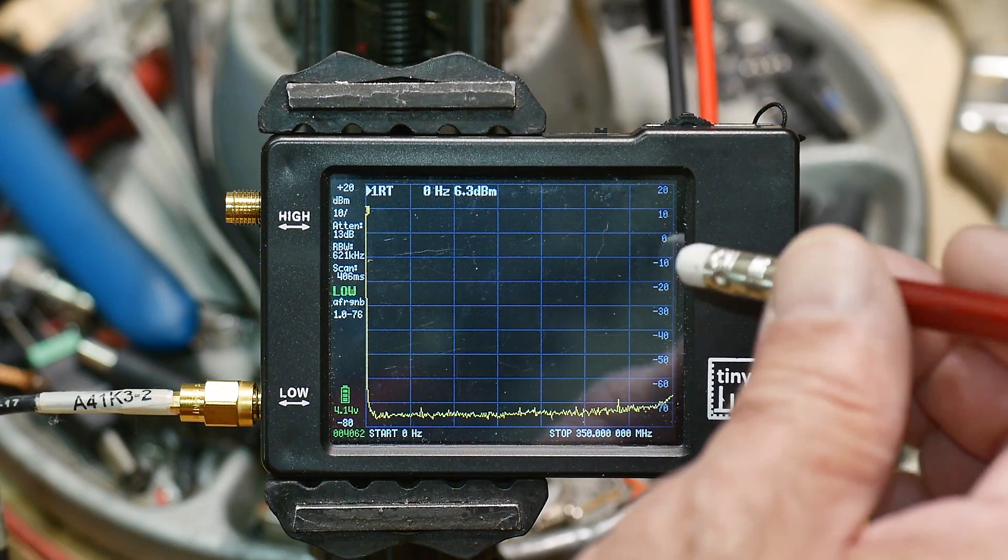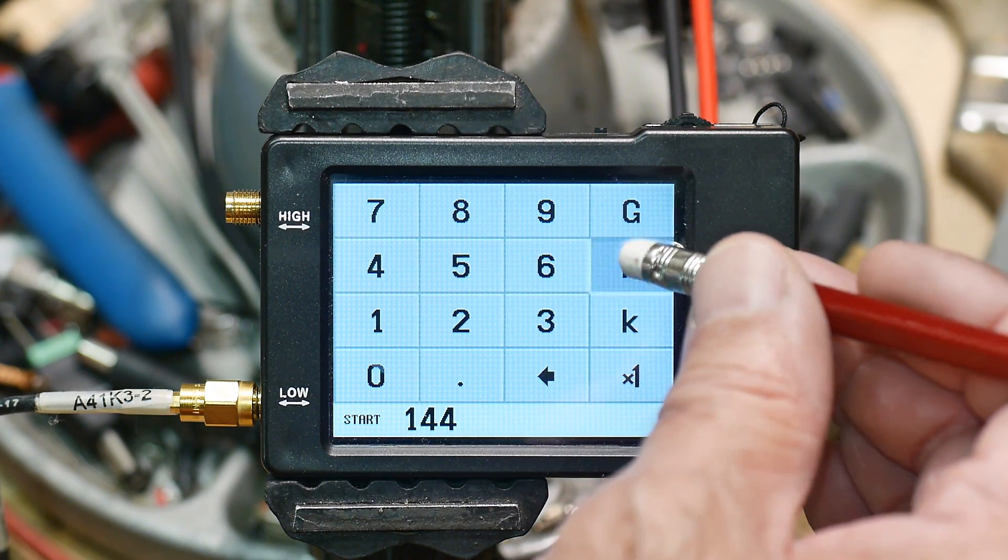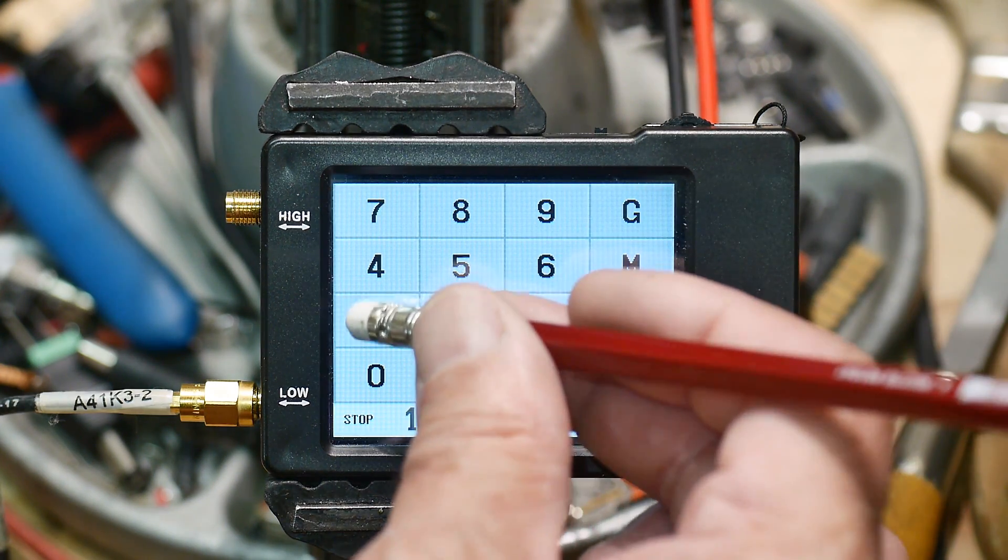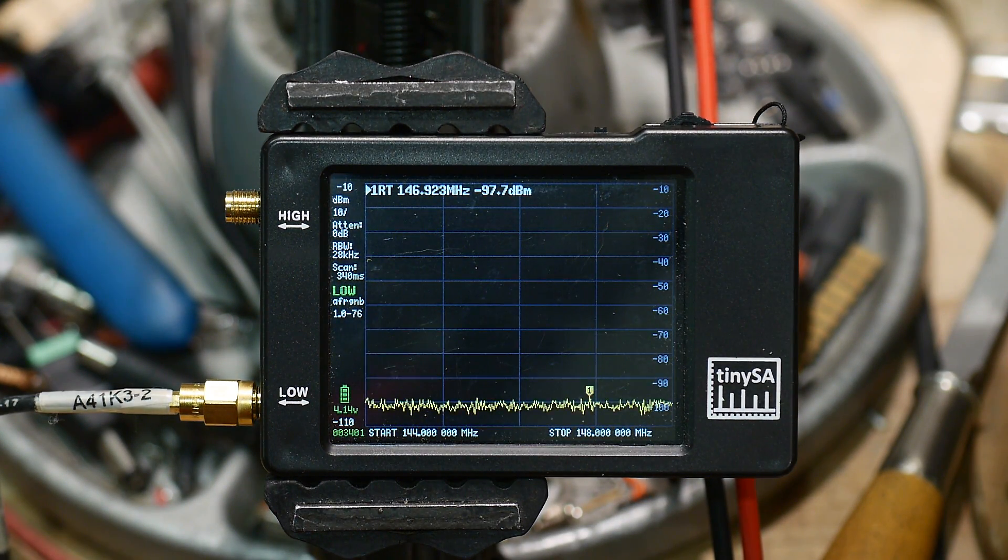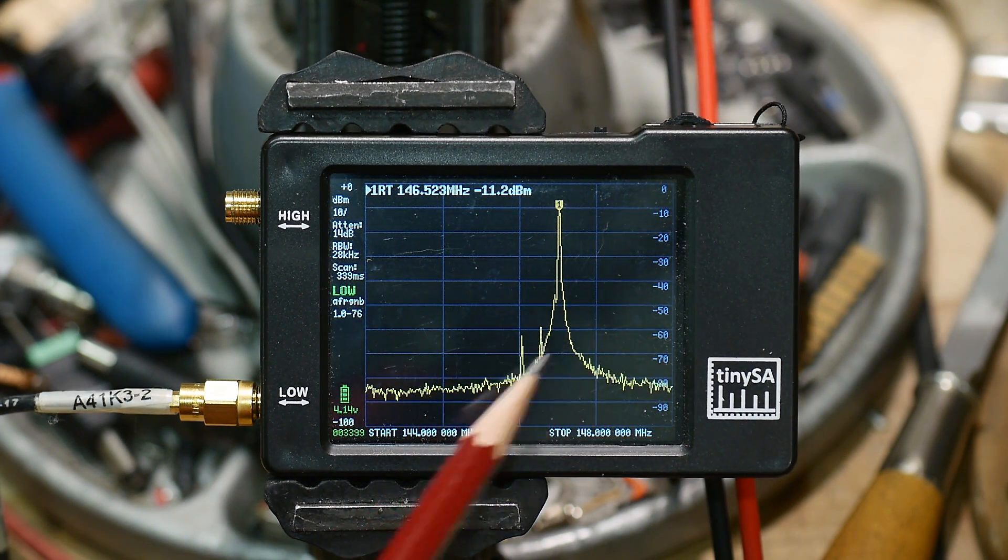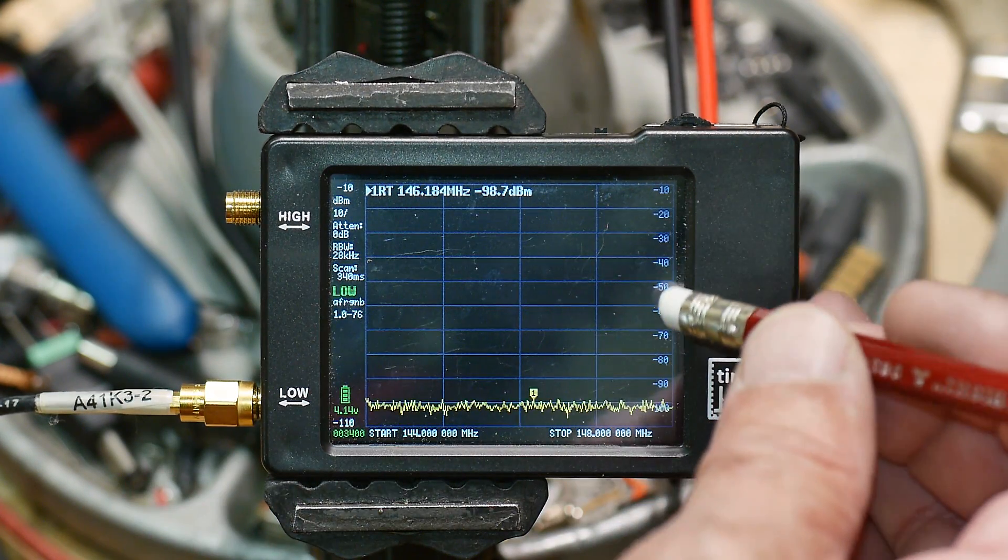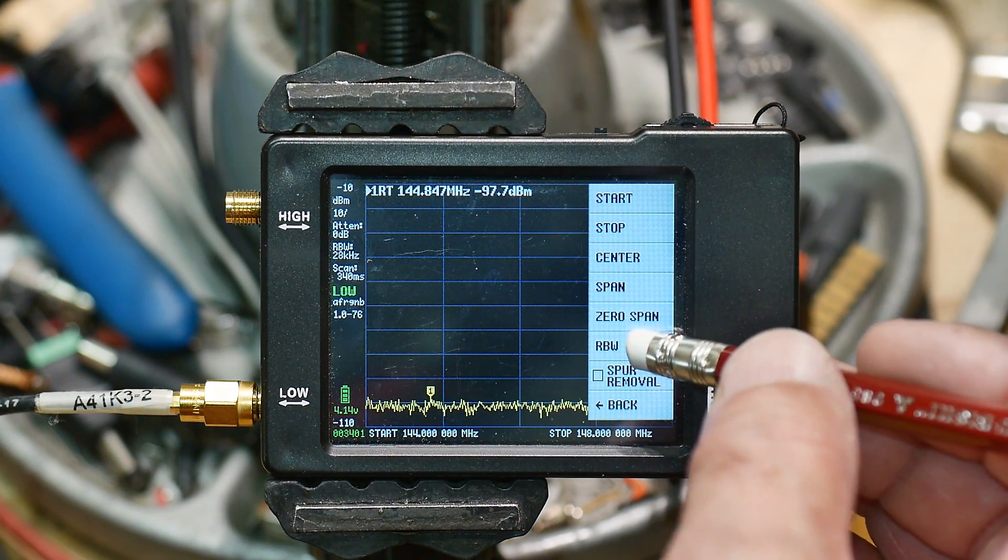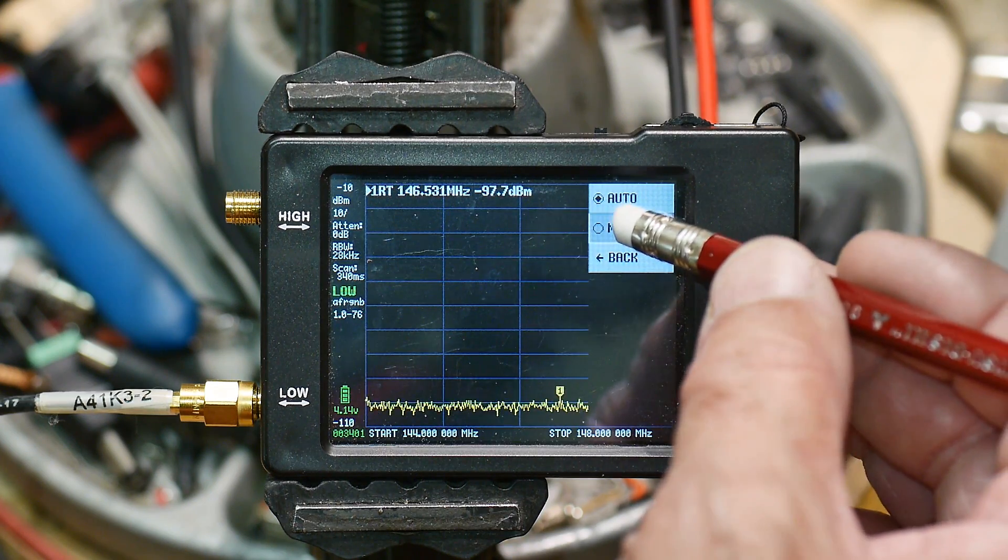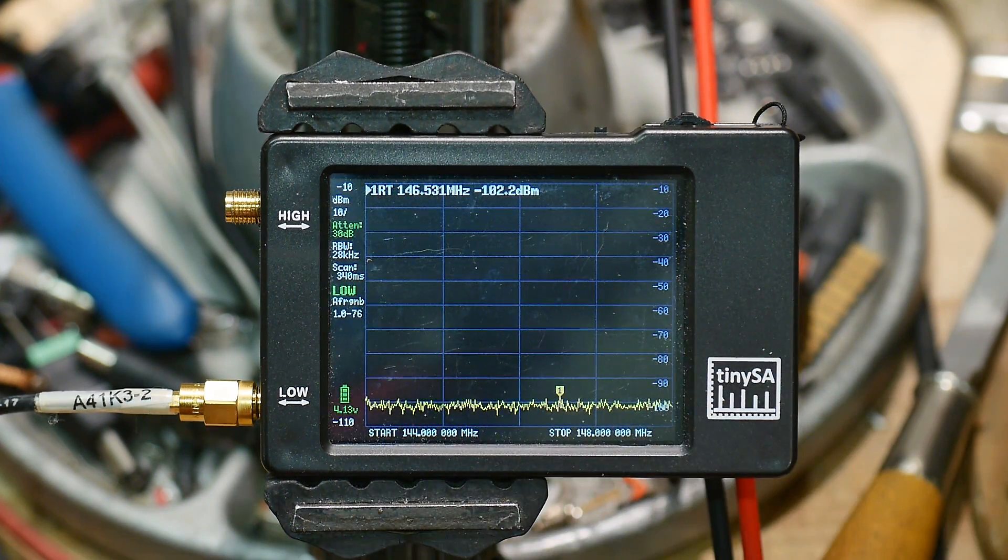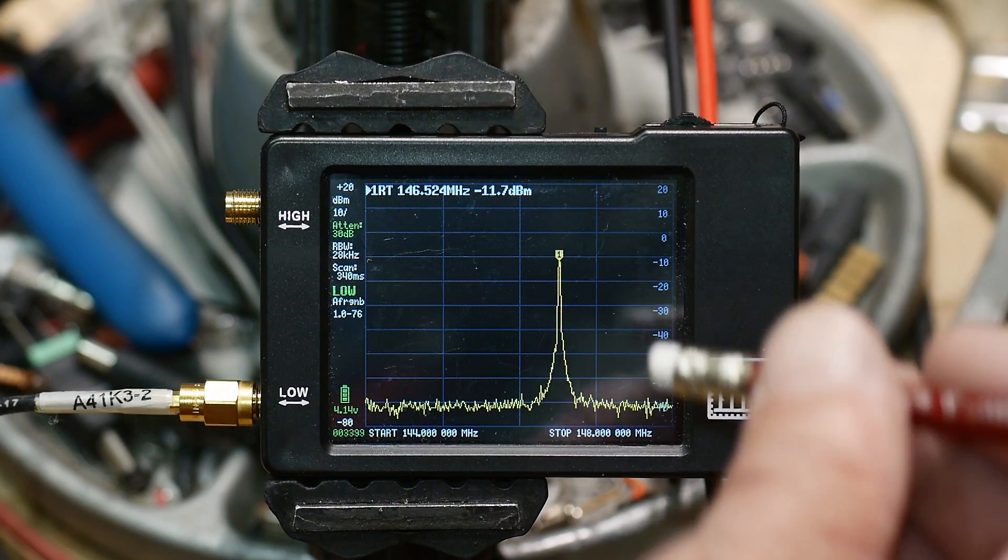Let's go to the 2 meter ham band. We'll go frequency start 144 megahertz, stop 148 megahertz. That is the 2 meter band. And then we will transmit there, and boom. Now there's a whole bunch of what I call phase noise, and that's probably due to this auto attenuator, which I don't like. So I'm going to set the attenuator manual to 30. And there we go. We'll get a clean looking signal.